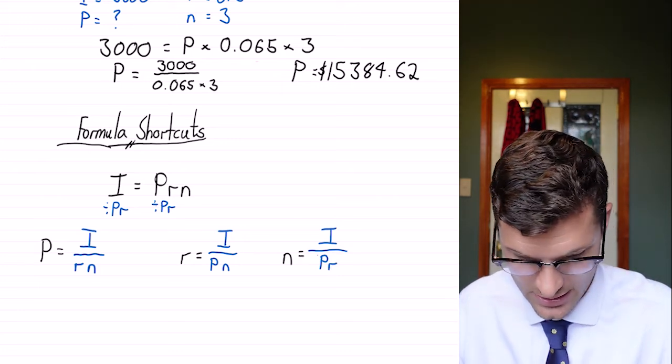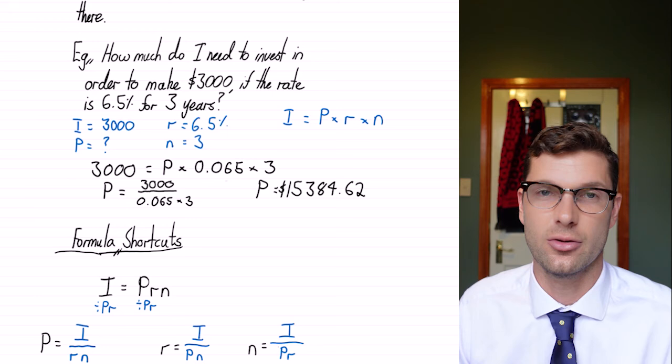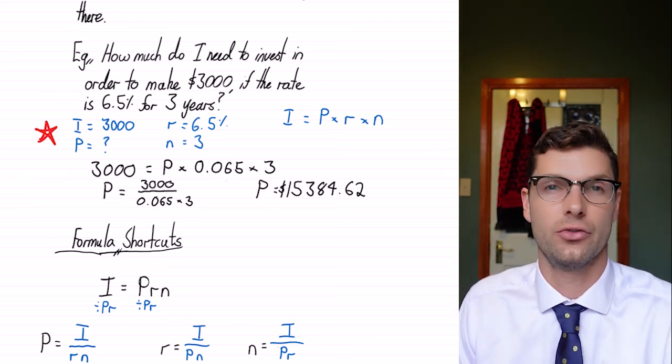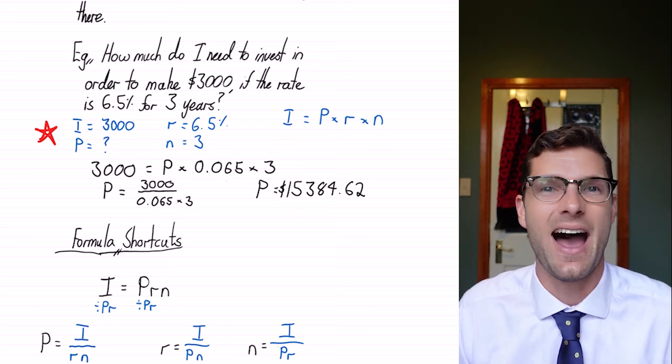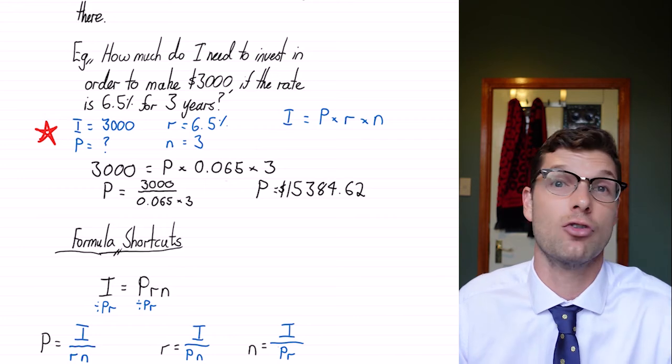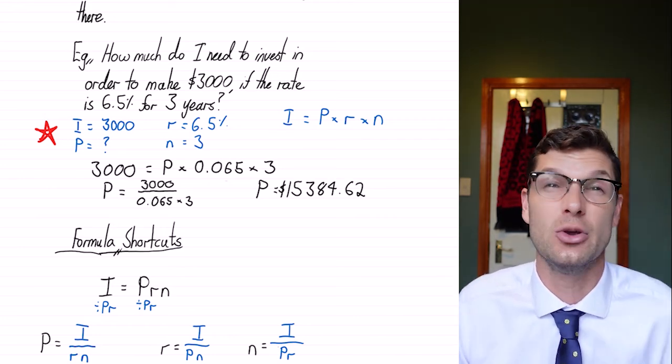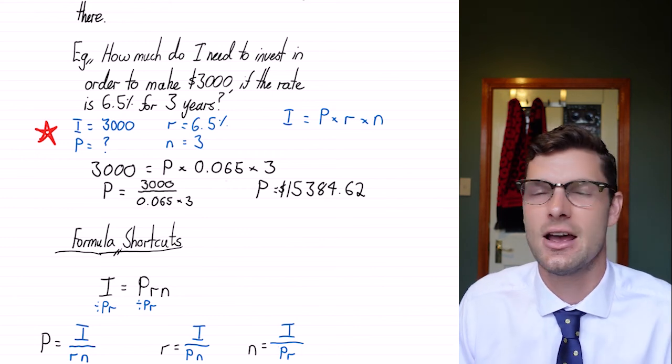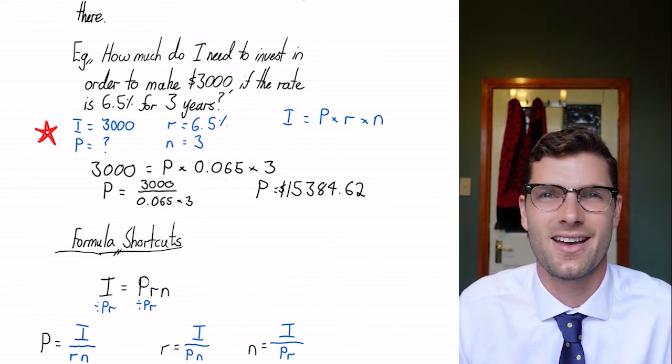So I'm a really big believer in writing out this first step that I did in this example. If you tell me what variables you have and what you're looking for, 100% you're going to get marks, even if you screw it up in your calculator or something like that. So just take the time to write I, P, R, N, and write in your variables. It'll just help you scaffold your answer and show the teacher that you know what you're doing. Thanks very much guys, and I'll see you later.